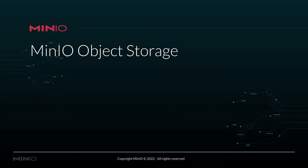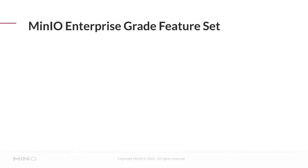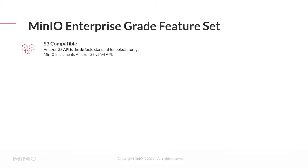Let's talk about MinIO object storage — what exactly are you getting with MinIO, and what makes it the better choice compared to other offerings? MinIO provides an enterprise-grade feature set. We're not just S3-compatible; we build out for S3 compatibility and do extensive testing to ensure our behavior very closely matches that of S3. It's not just that our request and response bodies in the S3 API match — we test and ensure that the underlying behavior also matches.